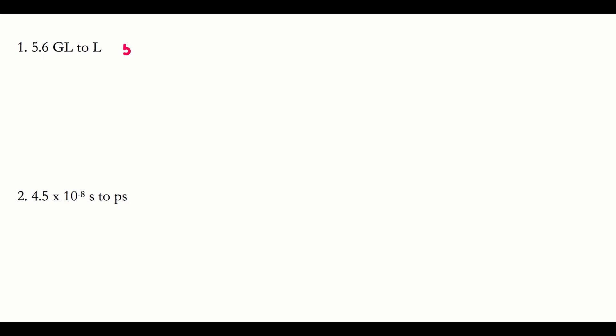I'm going to review a couple more conversion practice problems. The first one gives me 5.6 gigaliters. I put my given — 5.6 gigaliters — and I need to get out of gigaliters, so I put that on the bottom. I need to put what I'm trying to get into on top, which is liters. Looking at the table provided, one gigaliter is 10 to the ninth liters.